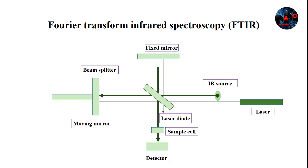Infrared radiation of about 10,000 to 100 per centimeter is sent through the sample, with part of the radiation absorbed and some passing through. The radiation is converted by the sample to vibrational or rotational energy. The resultant signal obtained at the detector is a spectrum generally from 4,000 to 400 per centimeter, which represents the sample's molecular fingerprint. Every molecule has a unique fingerprint, which makes FDIR an invaluable tool for chemical identification.